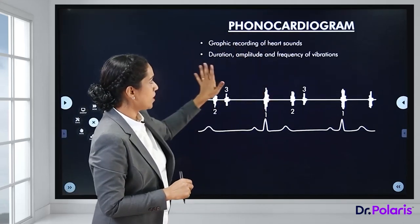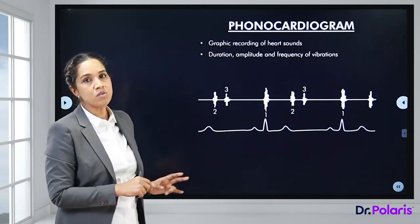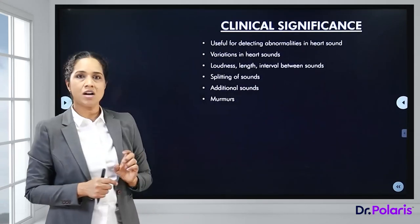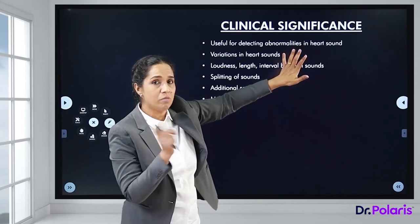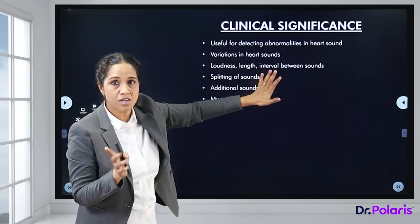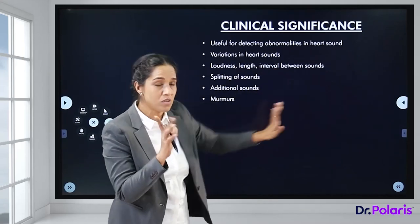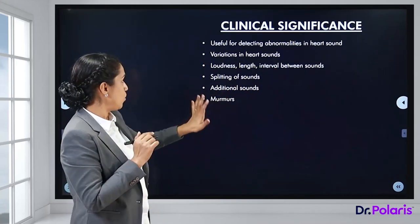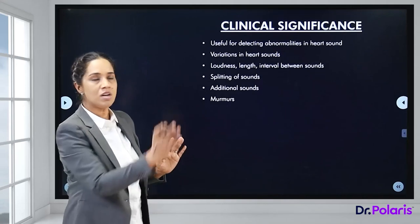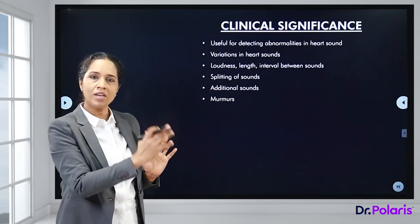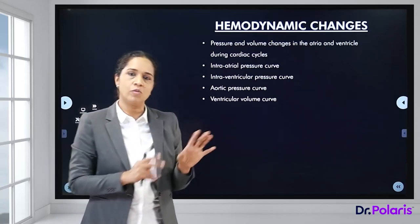The fourth heart sound (S4) is not heard in normal subjects; it is only recorded. Atrial systole causes vibrations of the AV valves and ventricular walls — that is what produces S4, heard just before S1. S4 is heard in abnormal conditions: hypertrophy of the atrium. It is absent in atrial fibrillation.